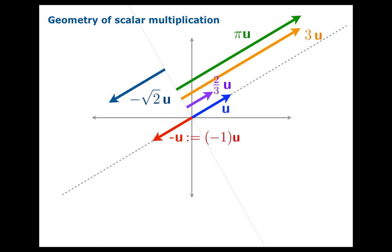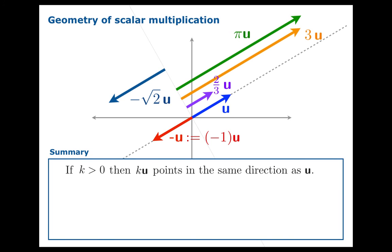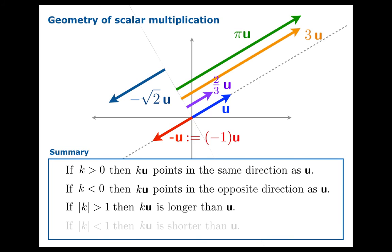What can we take away from all of this? When you multiply by a scalar k: if k is positive, then ku will point in the same direction as u; if k is negative, ku will flip and point in the opposite direction; and if the absolute value of k is larger than 1, then ku is actually longer than u.